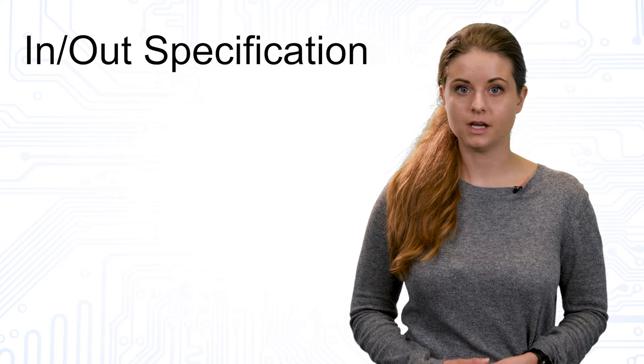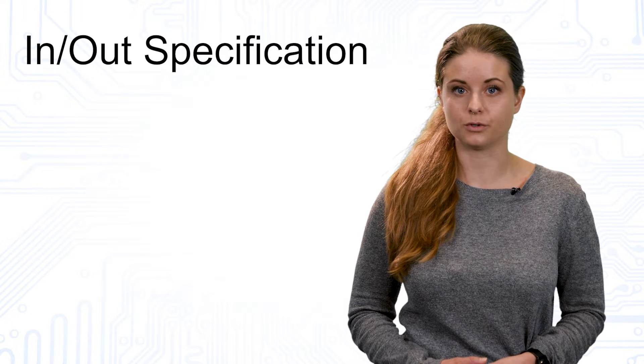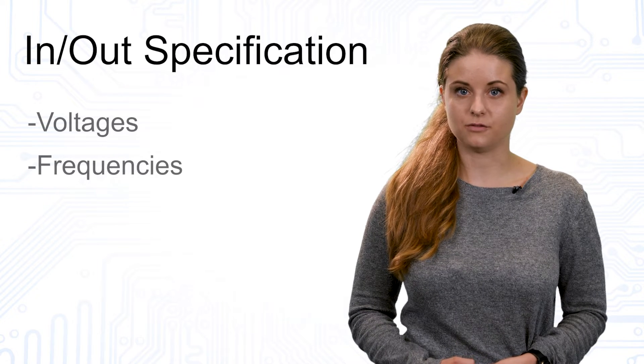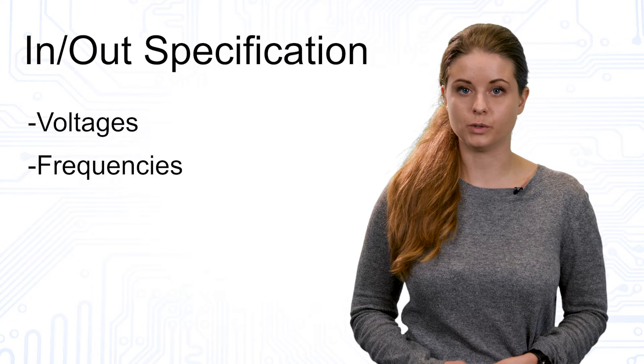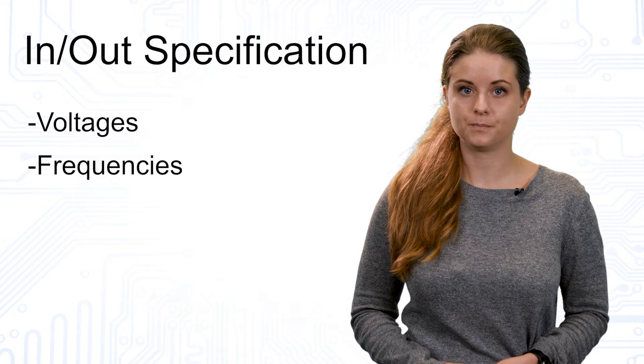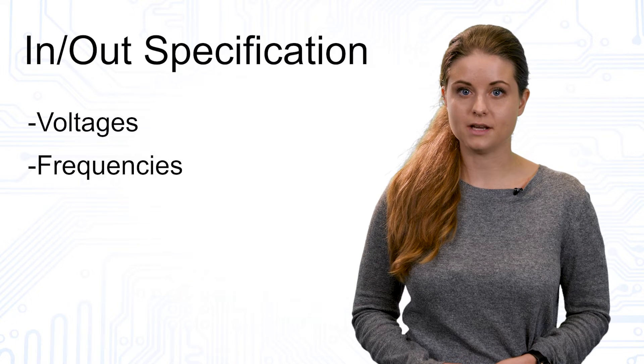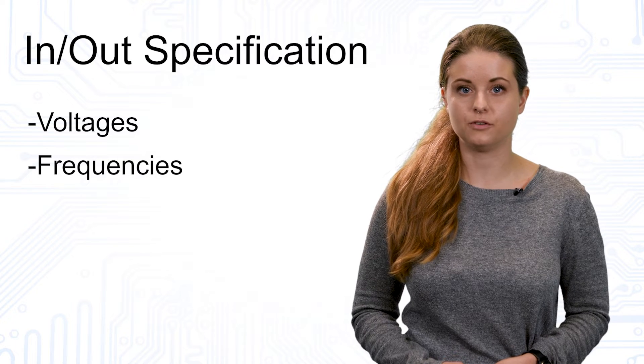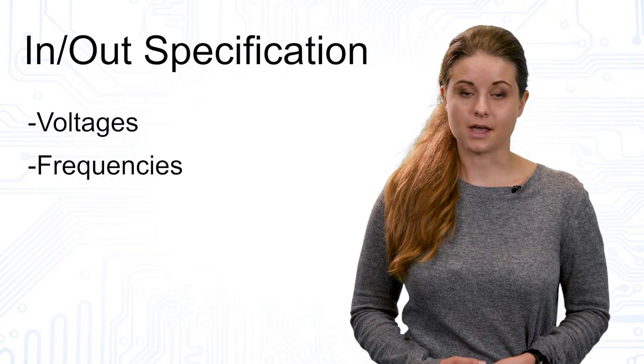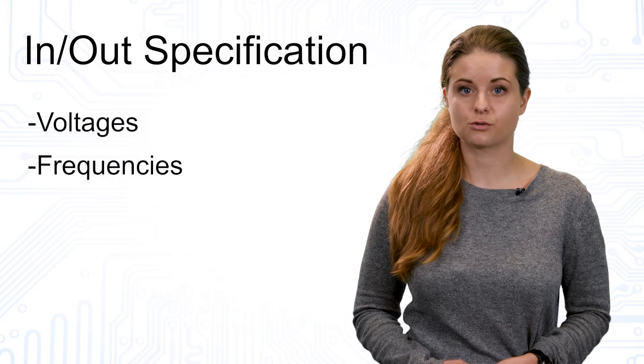As every power supply has an input and output, there exist specifications regarding the input and output. The input specifications tell us in which voltage and frequency range the input voltage must be. The output specifications tell us the range of the output voltage if it is adjustable. As the output is a DC voltage, the frequency is naturally zero.